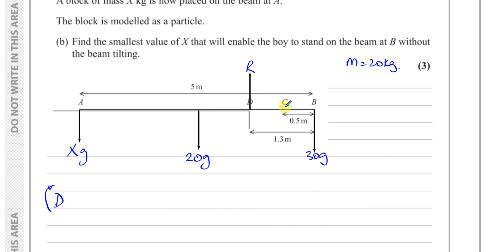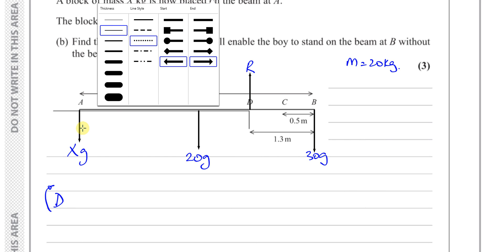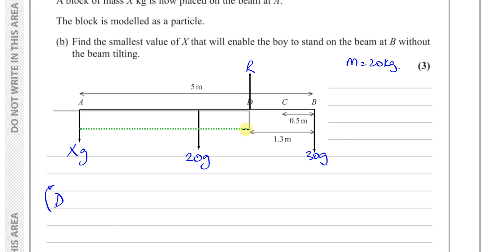We have xg newtons at A, 20g newtons at the midpoint, and 30g newtons at B. We need to find the distances from each force to D. The distance from A to D is 5 minus 1.3, which is 3.7 metres. The distance from the midpoint to D is 2.5 minus 1.3, which is 1.2 metres. The distance from B to D is 1.3 metres.